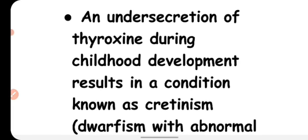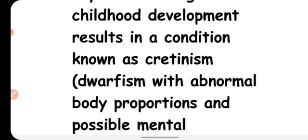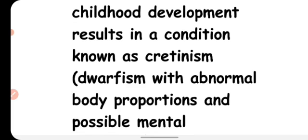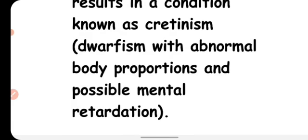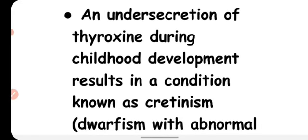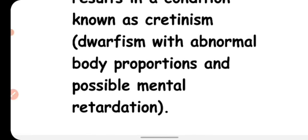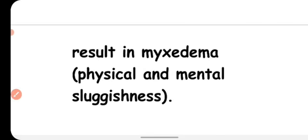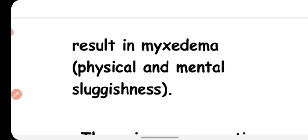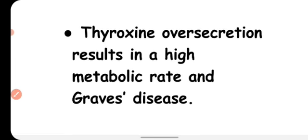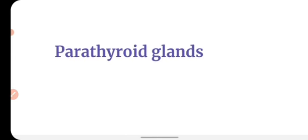Under-secretion of thyroxin during childhood results in cretinism, which involves dwarfism with abnormal body proportions and possible mental retardation, as the body and brain cells cannot grow properly. In adults, under-secretion can result in myxedema, causing physical and mental sluggishness. Over-secretion of thyroxin results in a high metabolic rate and Graves' disease.